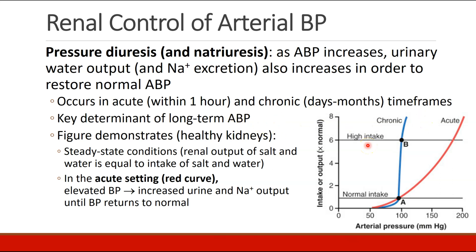Chronically, the body can make long-term accommodations as well — this is one of the key determinants of long-term arterial blood pressure. In this figure, a patient with healthy kidneys has a normal arterial pressure of about 90 and a normal intake and output of salt and water. When the patient acutely increases their intake of salt or water, this causes an acute increase in blood pressure. Immediately, this elevated blood pressure causes the body to increase urine output and sodium output until blood pressure returns back to normal.